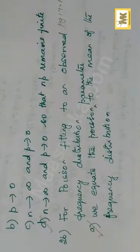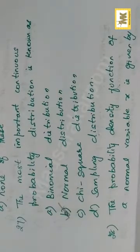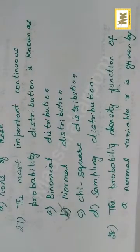For fitting the Poisson distribution, we equate the Poisson parameter to the mean of the frequency distribution. The most important continuous probability distribution is normal distribution.